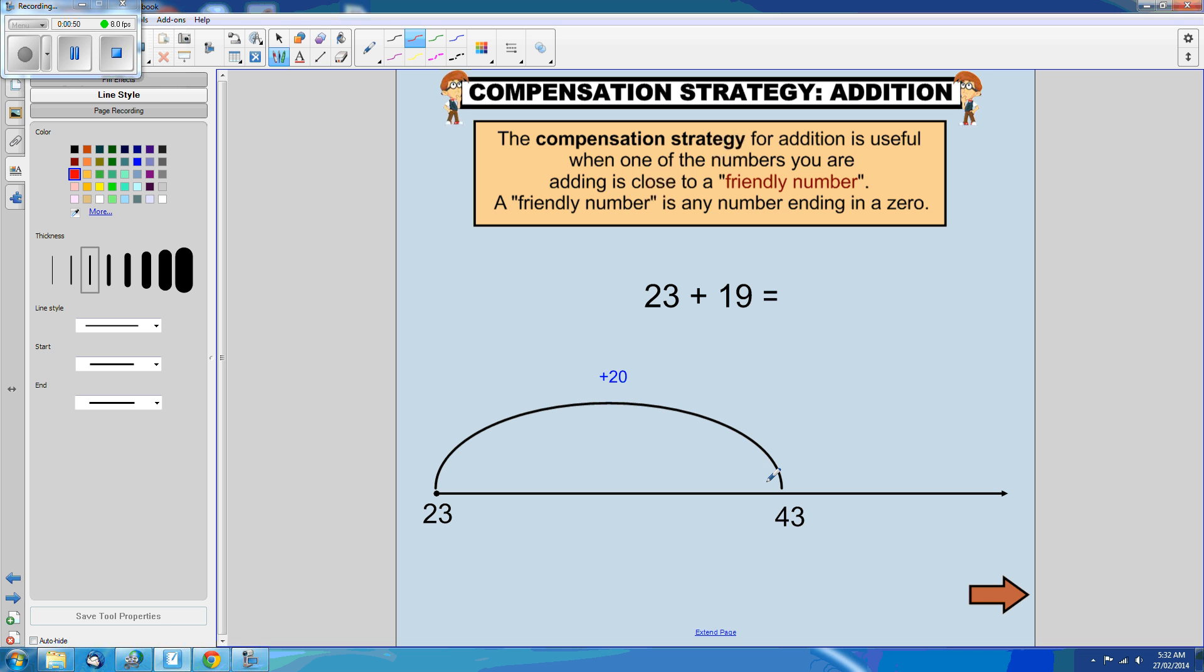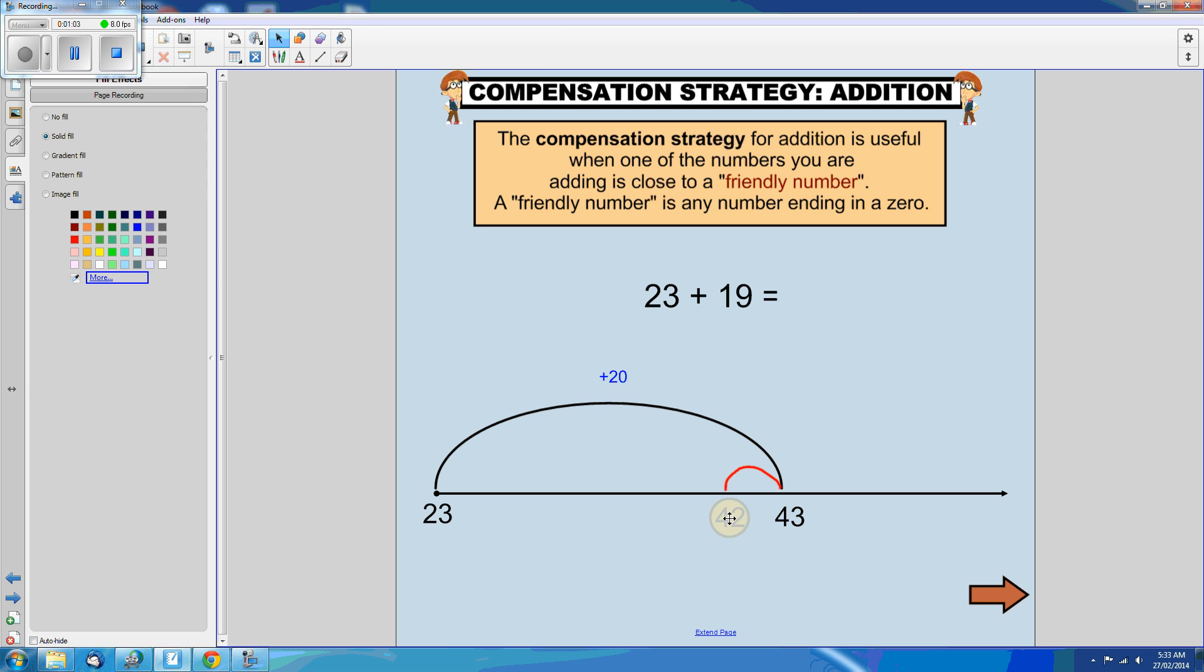Because I need to remember to compensate, I think to myself, I've added 20, oops, I only meant to add 19, so I have to go back one. Which means my answer is 42. 23 plus 19 is 42.